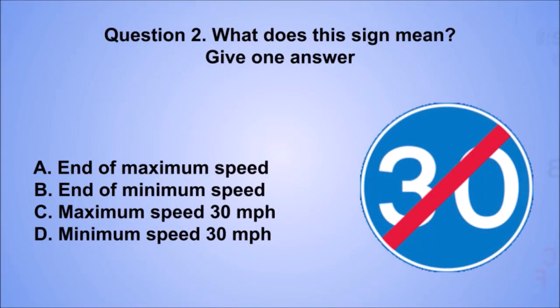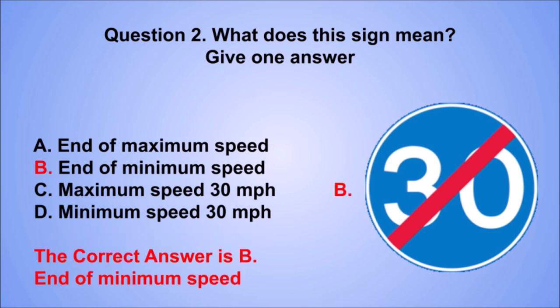Question 2. What does this sign mean? Give one answer. A: End of maximum speed. B: End of minimum speed. C: Maximum speed, 30 miles per hour. D: Minimum speed, 30 miles per hour. The correct answer is B: End of minimum speed.